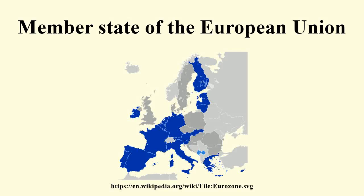The European Union comprises 28 member states. Each member state is party to the founding treaties of the Union and thereby subject to the privileges and obligations of membership. Unlike members of most international organizations, the member states of the EU are subjected to binding laws in exchange for representation within the common legislative and judicial institutions. Member states must agree unanimously for the EU to adopt policies concerning defense and foreign affairs.